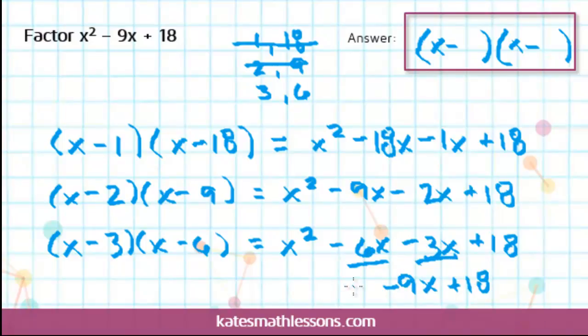So this does come out to the quadratic expression that I was given in the problem, which tells me that I have the correct answer. So my answer would be x minus 3 times x minus 6. If you had this switched around and you wrote x minus 6 times x minus 3, that would also count as the correct answer.